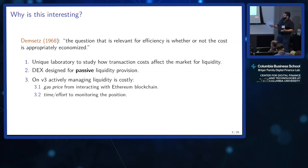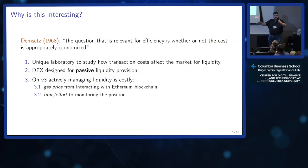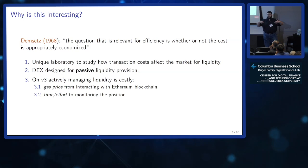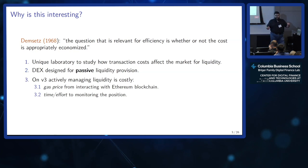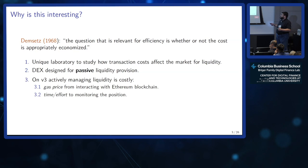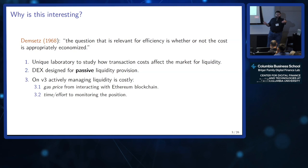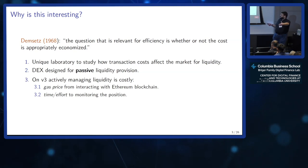Uniswap is a unique laboratory to answer this deep economic question because liquidity providers are on one side and liquidity demanders on the other, and because it was designed with transaction costs in mind. Originally, Uniswap V2 was designed for passive liquidity provision — you just set it and forget it, just as you would with an ETF — because you don't want people interacting all the time with the blockchain.